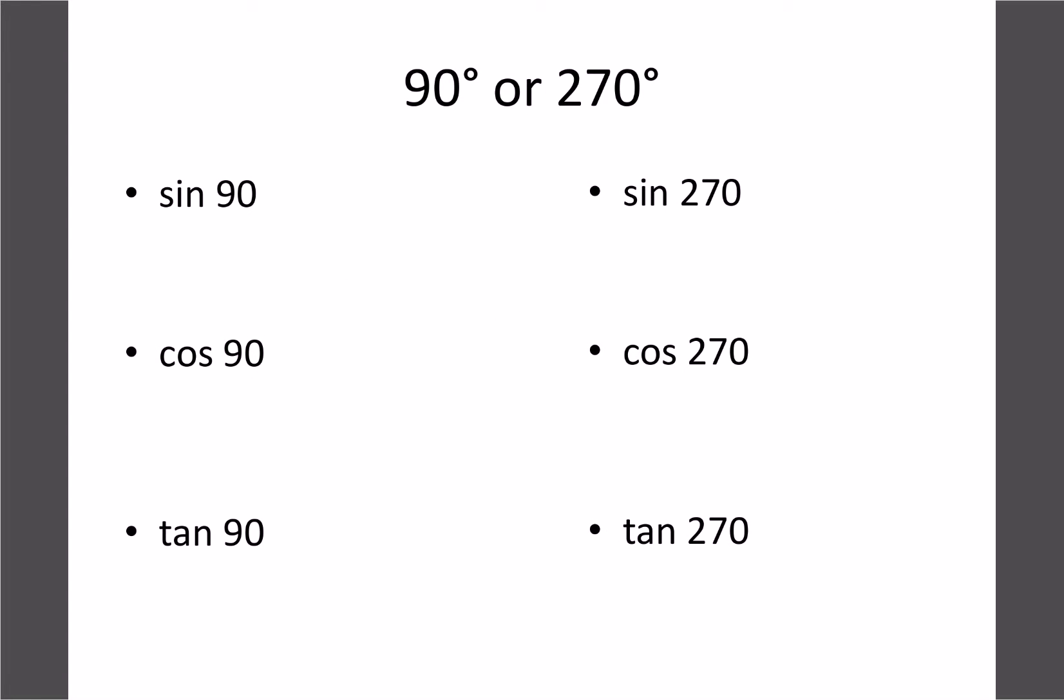And the same thing will apply if we deal with 90 or 270. So if we go sine of 90, you're going to get 1. If you go sine of 270, you get negative 1. So those two are different. If we try cosine of 90, we get 0. Cosine of 270, we also get 0. And then our last one, if we try tan of 90, you get undefined or error. And tan of 270 is also error. So like I said, if you're not sure about these, just use your calculator.